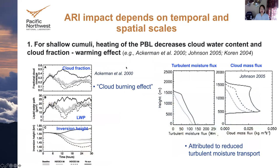The ARI effect on cloud convection really depends on the temporal and spatial scales you look at. For shallow cumulus, heating in the PBL can decrease cloud fraction and cloud water content — this is the so-called cloud-burning effect. Later, Johnson 2005 did a study at the same location as Ackerman 2000 and attributed this to reduced turbulent moisture transport because of the reduced turbulence.